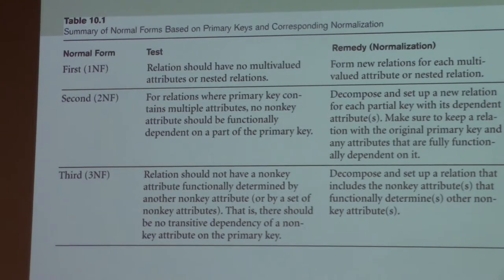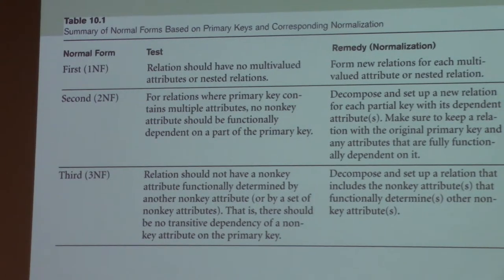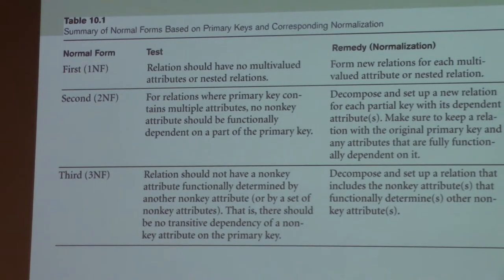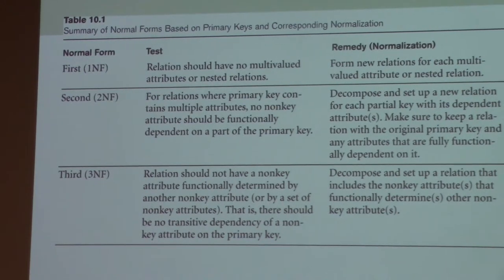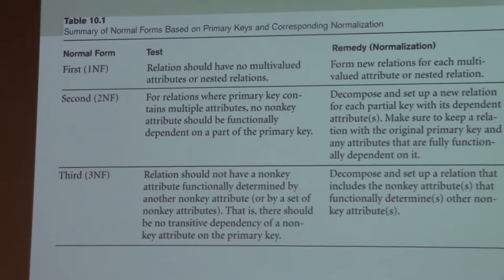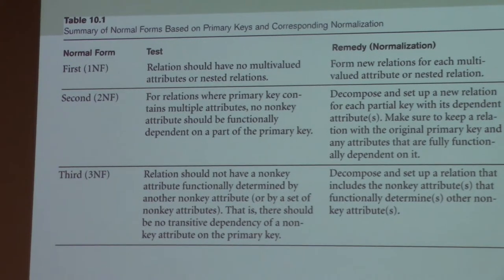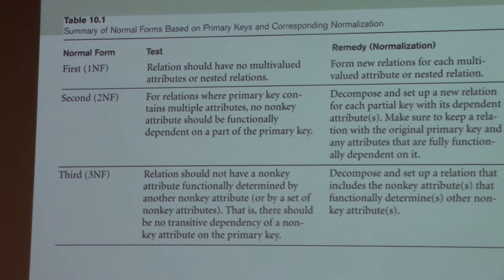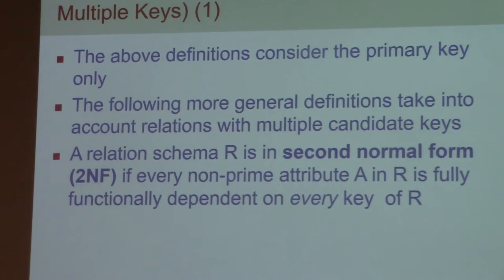Let me summarize the first, second, and third normal forms quickly. First normal form: single attribute — atomic values only. Second normal form: whole key dependency — in case of a single prime attribute, it's automatic. Third normal form: no transitive dependency. So far it's not very complicated — it's essentially a one-page summary.